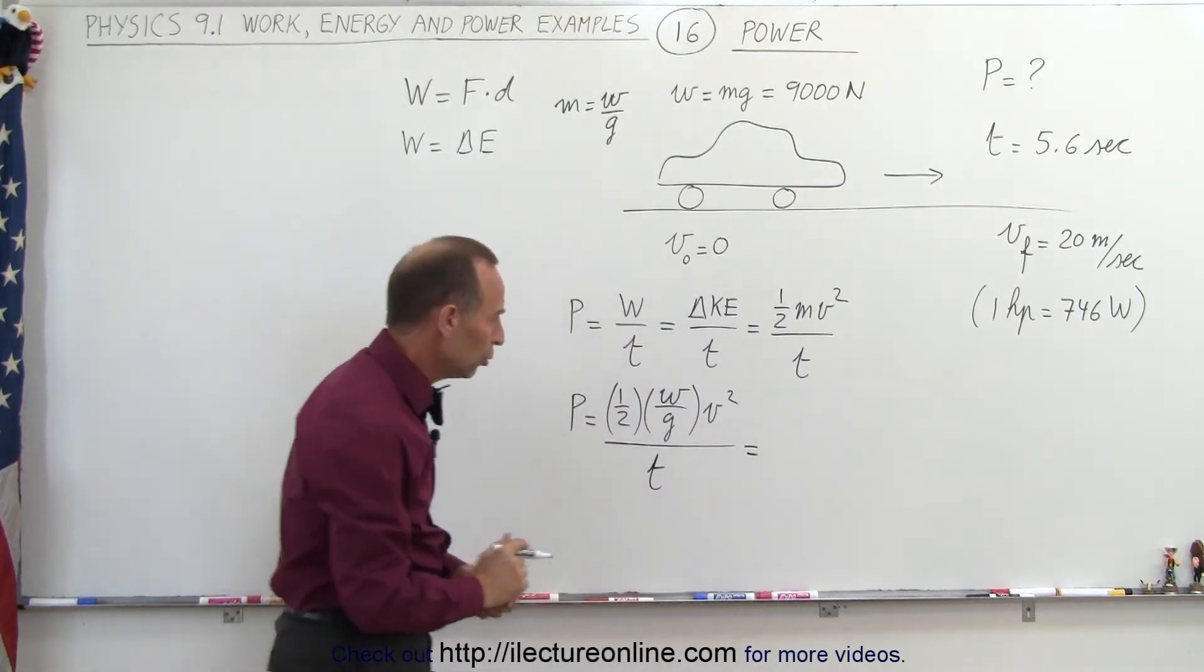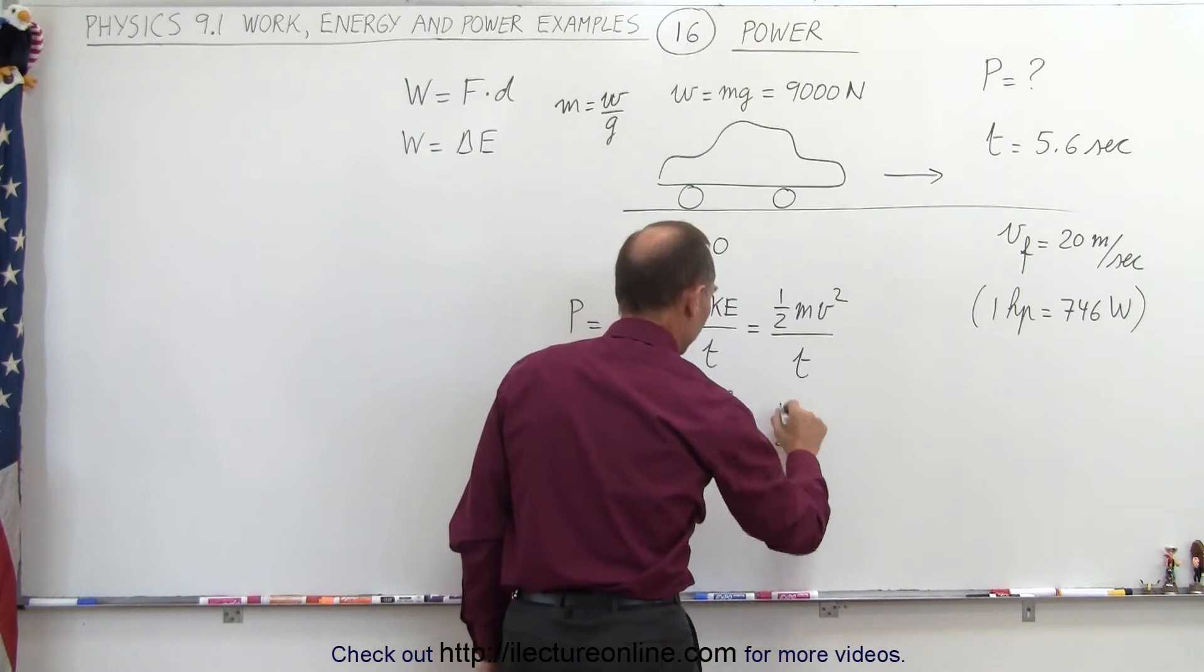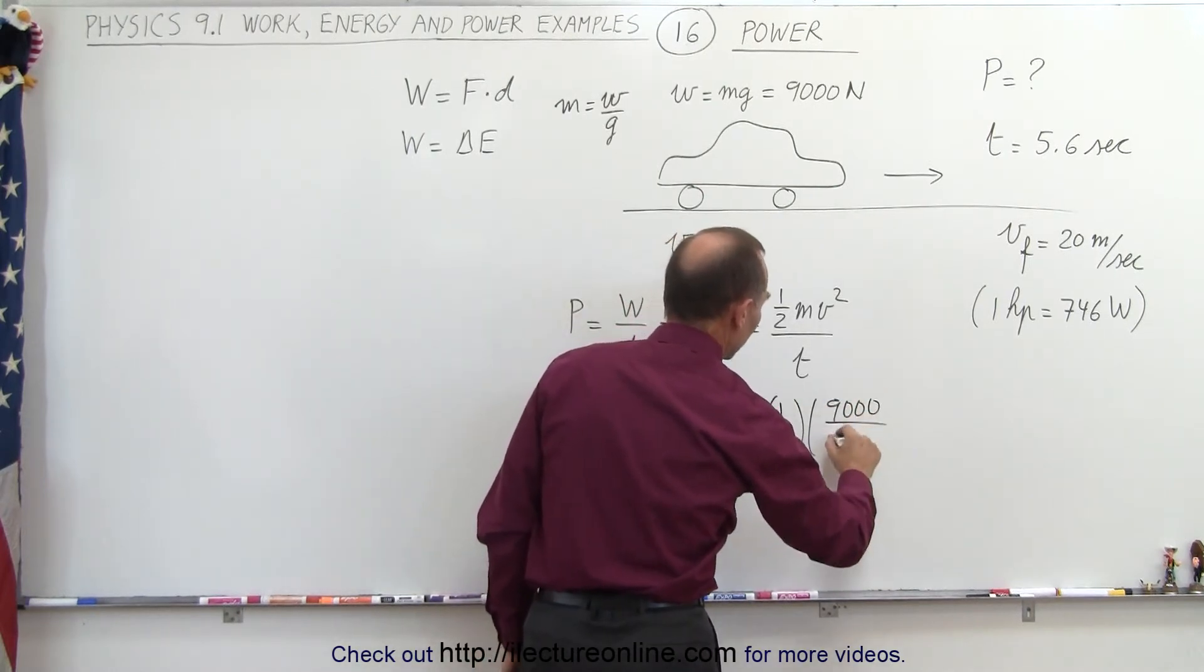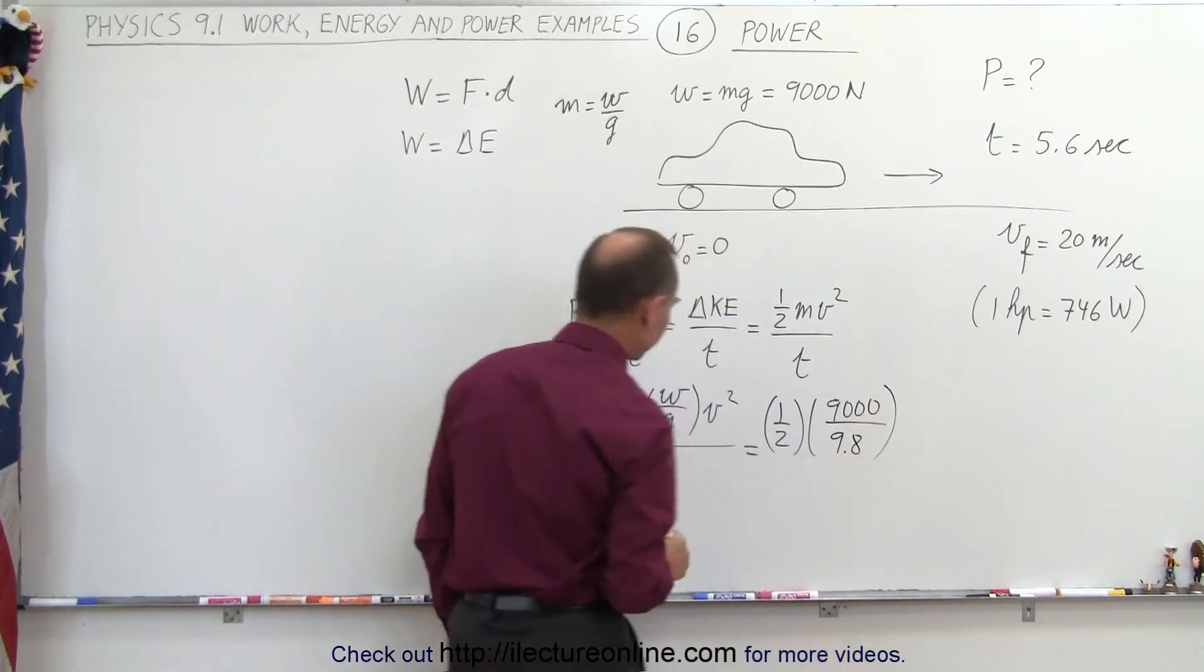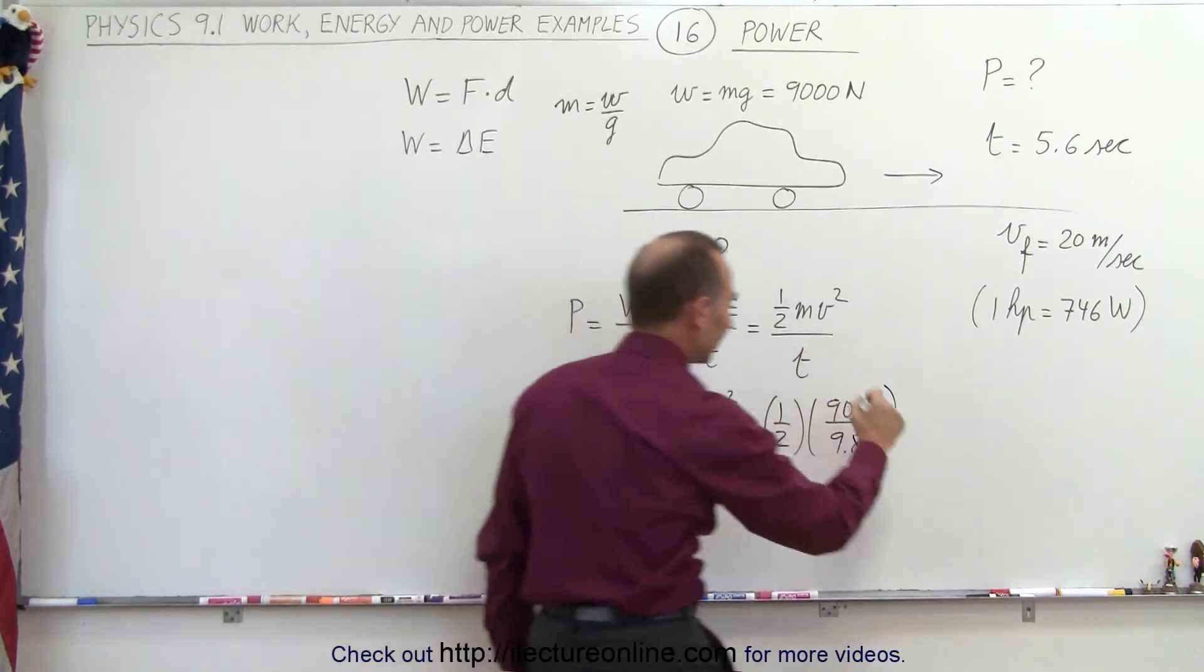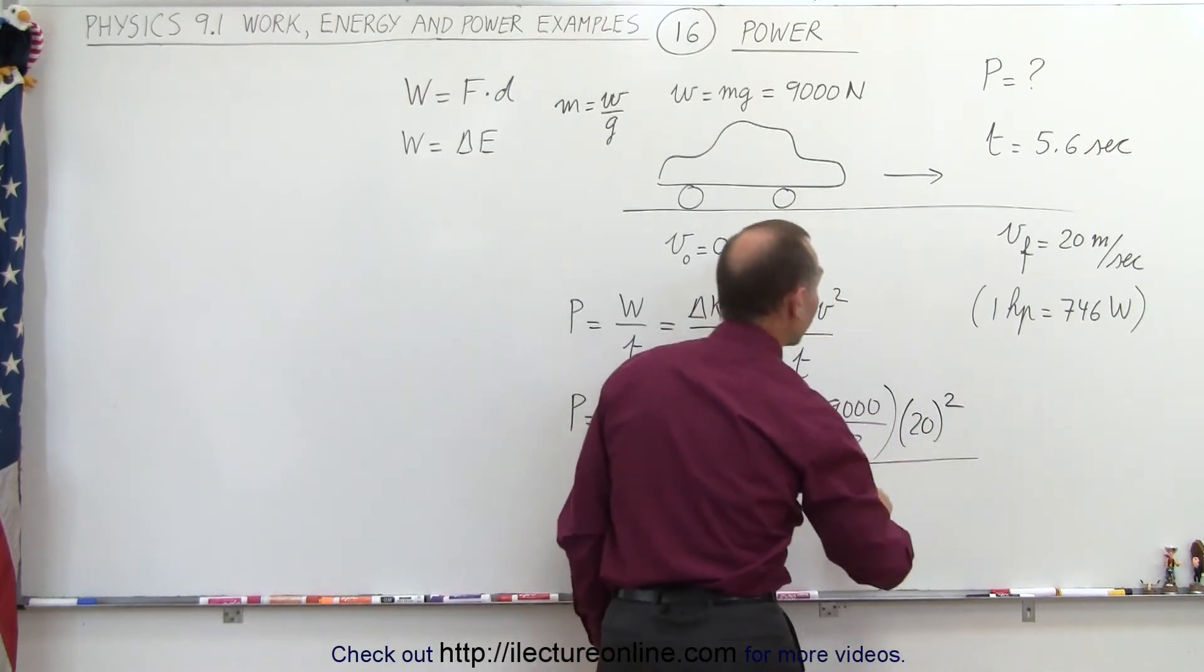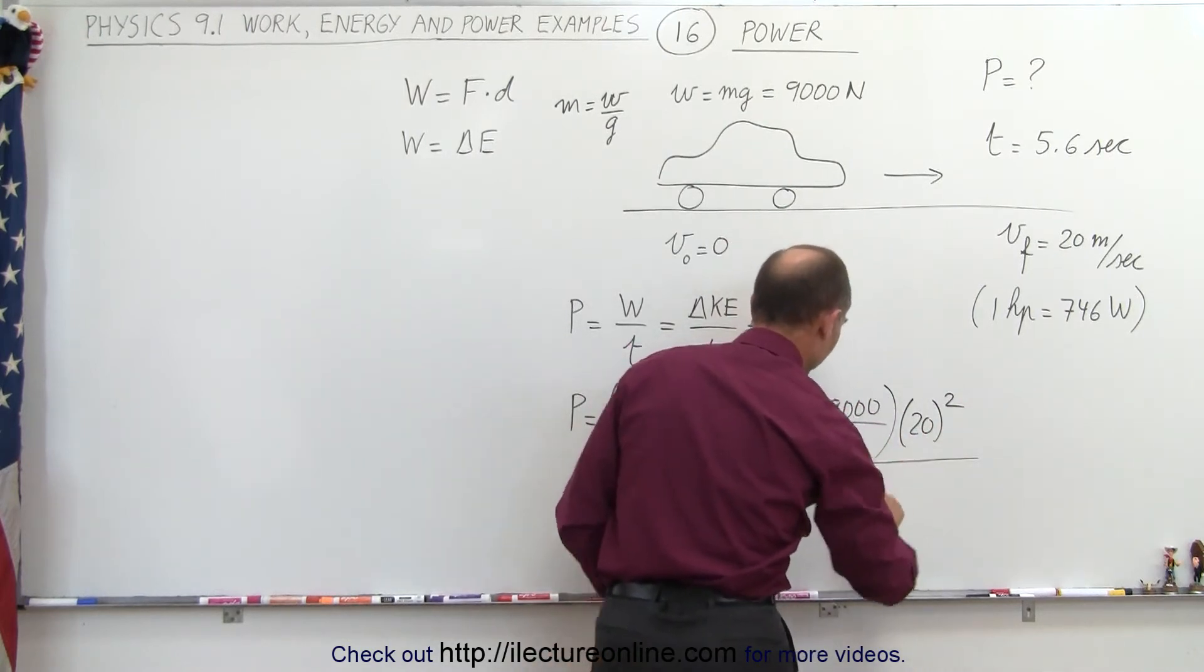This becomes equal to one-half times the weight, which is 9,000 newtons, divided by g, which is 9.8. Multiply that times the final velocity squared, and divide the whole thing by the amount of time that it took, which is 5.6 seconds.